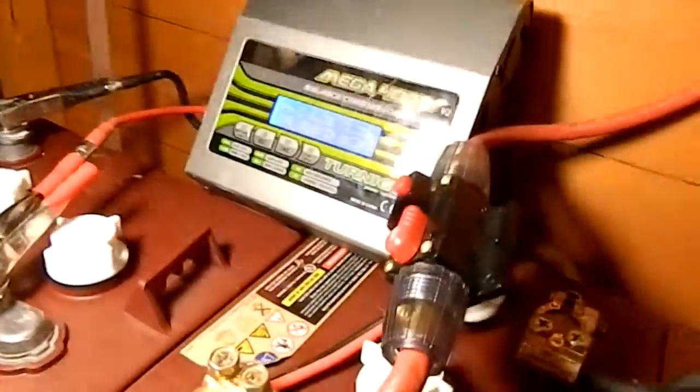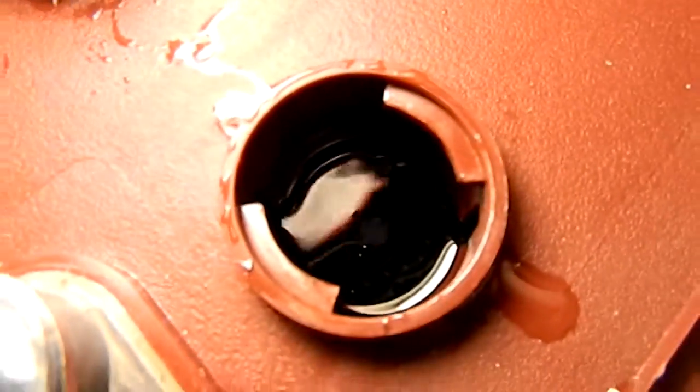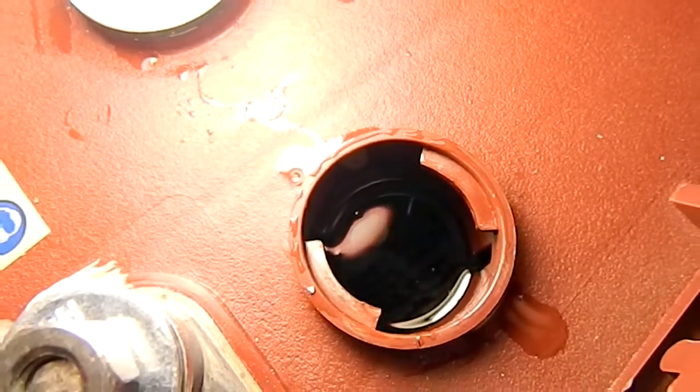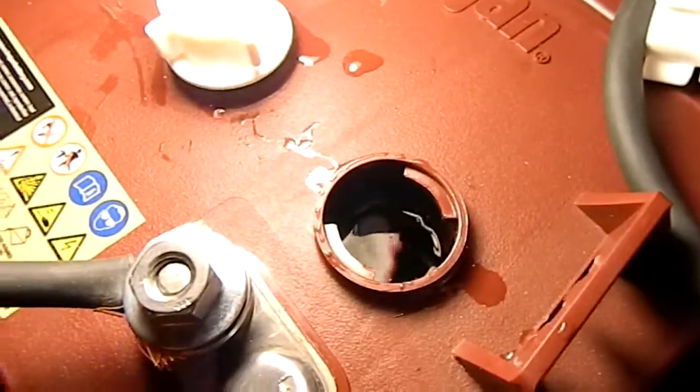But this is what a new battery should look like inside. You'll probably not be able to see it very well. It's quite hard to see but you should be able to see nice clean light grey plates in there and the separators should look all nice and clean.